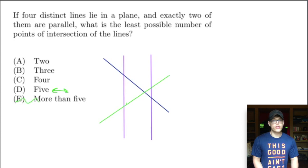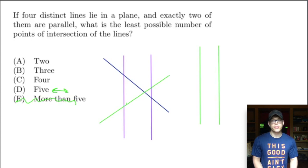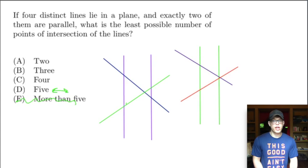Could we have fewer than five? Let's draw more lines. This time our parallel lines are in green, and we add a third line. For the fourth line, we position it so that one of its intersections coincides with an intersection we already have — so it doesn't add a new one. Counting now: one, two, three points of intersection. So we're down to three.